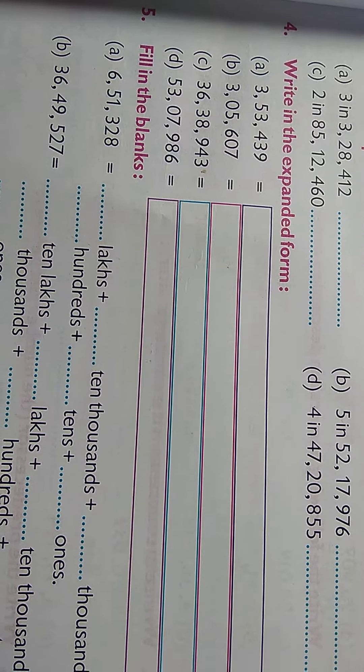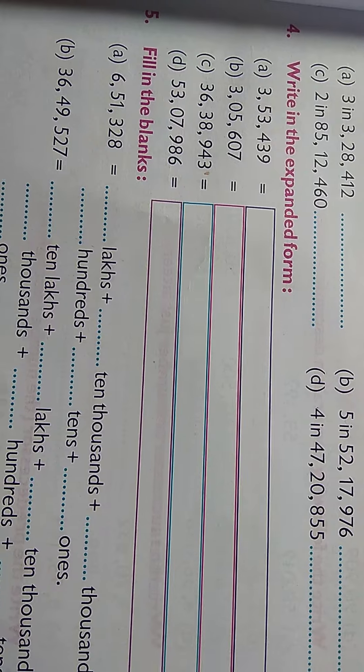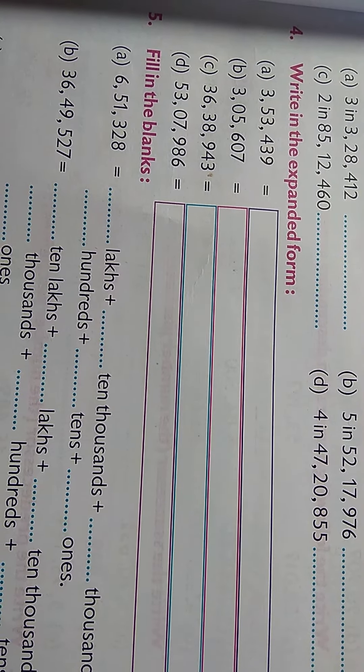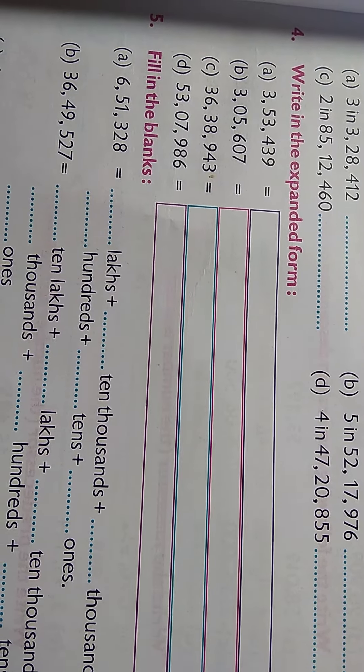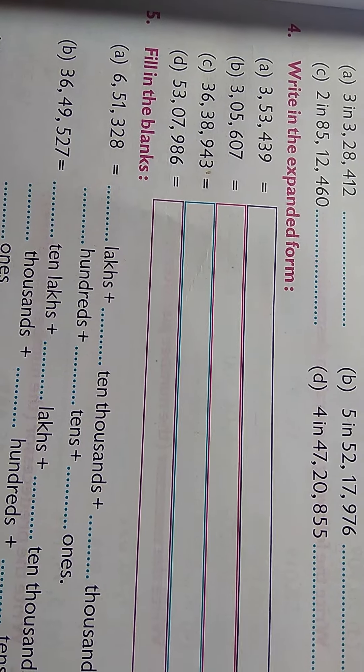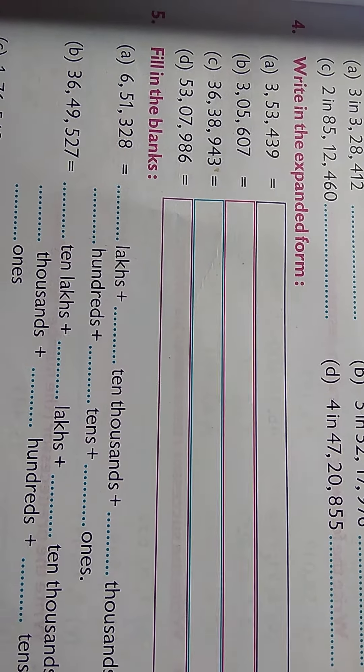Question number fourth is write in the expanded form. Part A is 3,53,439.